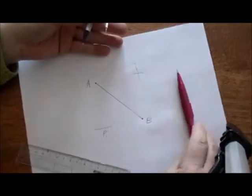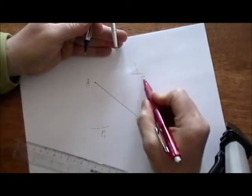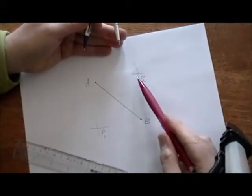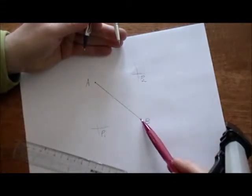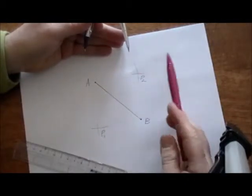Again, we've created a point right here that we'll call point P2, and that point P2 is equidistant from both of these endpoints, A and B. So we know that falls on the perpendicular bisector.